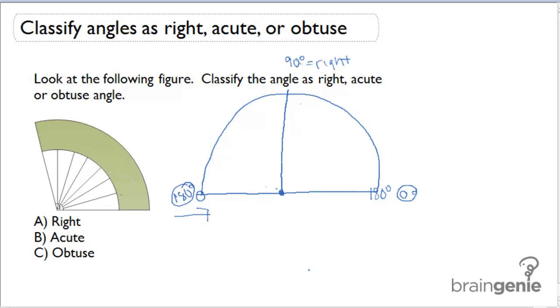Right angles have to be exactly 90 degrees. Anywhere from 0 to 90 is an acute angle. Anywhere from 90 to 180 is an obtuse angle. And an angle that equals exactly 180 degrees is called a straight angle.